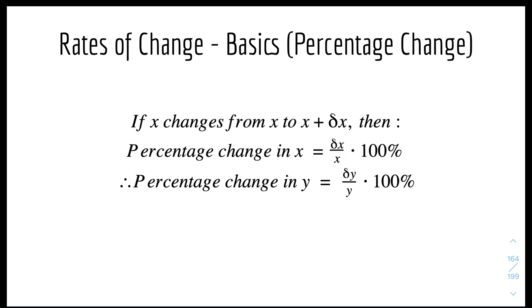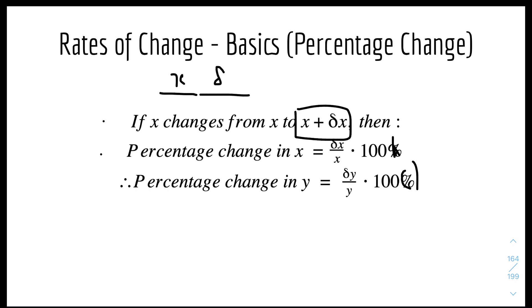Now we'll look at percentage change. If X changes from X to X plus delta X, then the percentage change in X equals (delta X over X) times 100%. Similarly, the percentage change in Y equals (delta Y over Y) times 100%. So delta X is the endpoint minus the starting point.